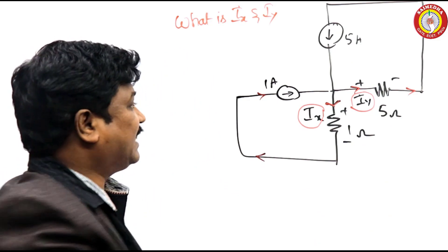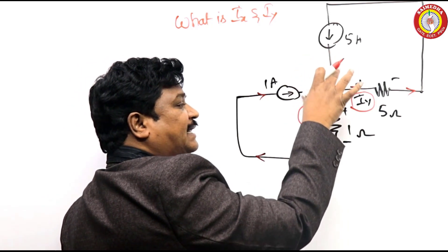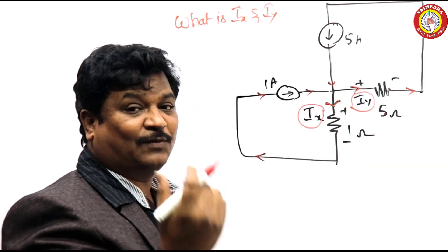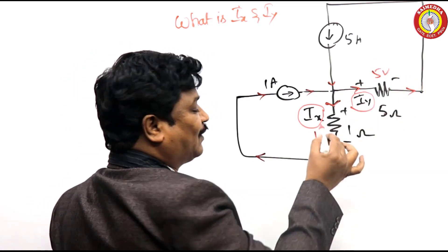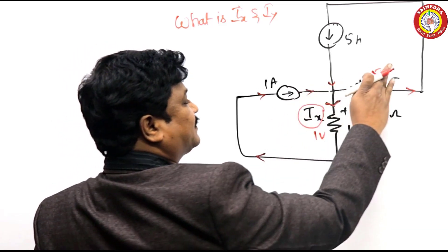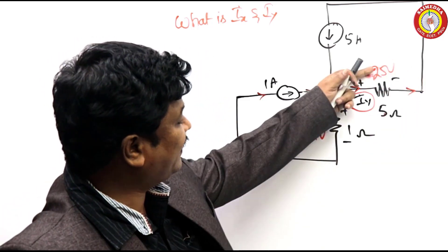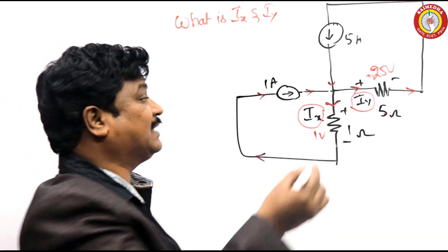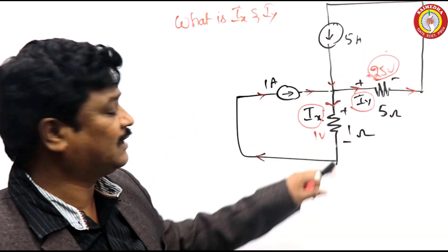Even if you want to check: this is 5 amperes, this one is 1 ampere, so 6 amperes is the incoming current; outgoing current is also 6 amperes. Here 5 ohms, here 1 ohm. The voltage here should be 25 volts. 25 divided by 5 is 5 amperes. Here 1 volt divided by 1 ohm is 1 ampere. Sometimes you will ask what is the potential across this - you can apply the simple concept and get it very easily.